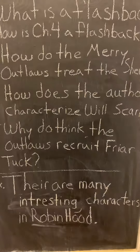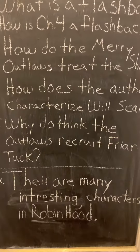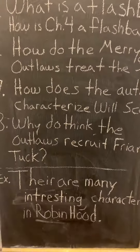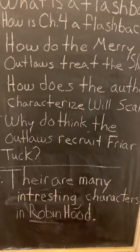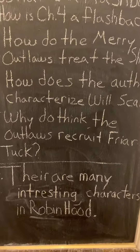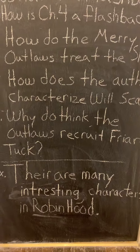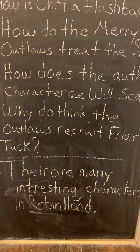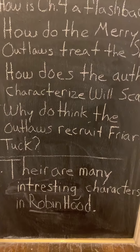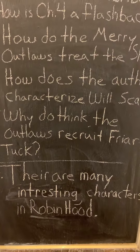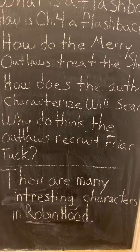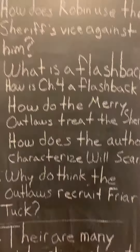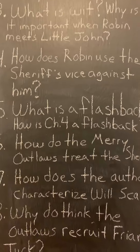Question eight, from chapter seven — a very exciting chapter: Why do you think the outlaws recruit Friar Tuck? They've basically assembled a team of all-stars — the best bowmen, the best fighters, the best swordsman in the area — but then they actively go out and try to get Friar Tuck to join their group. Why do you think they want Friar Tuck on their team?